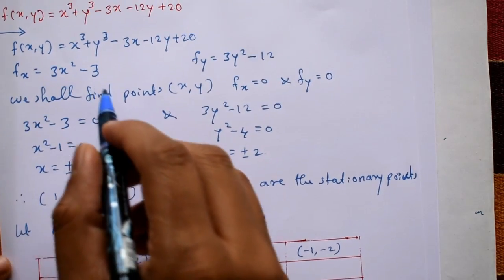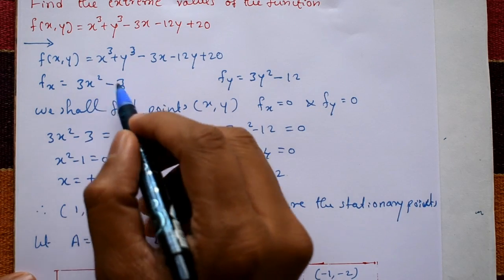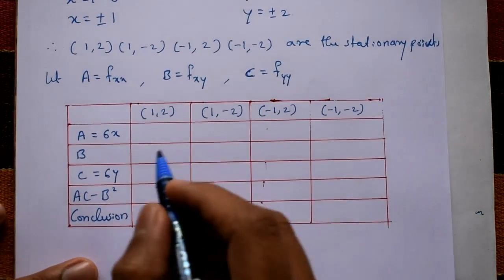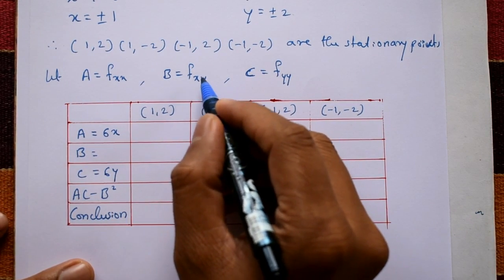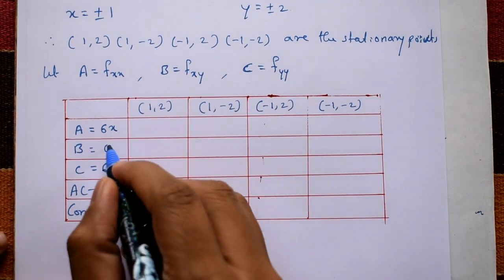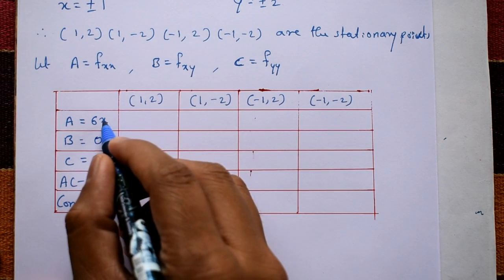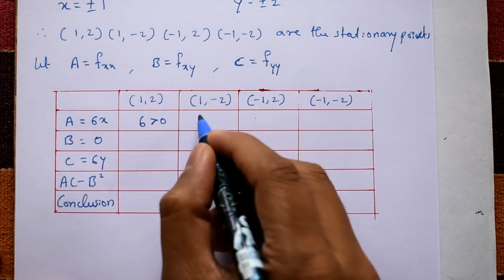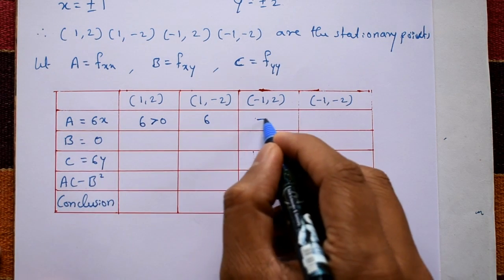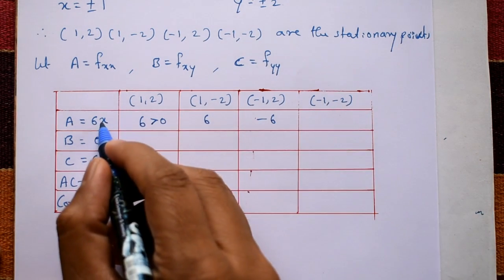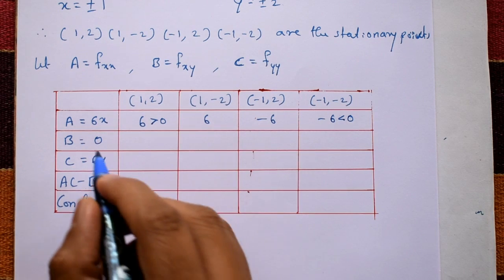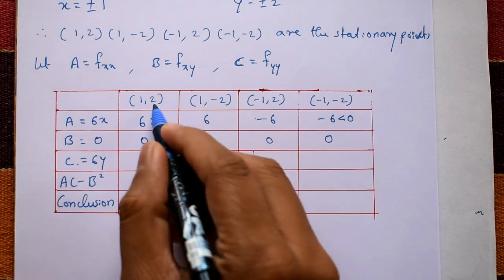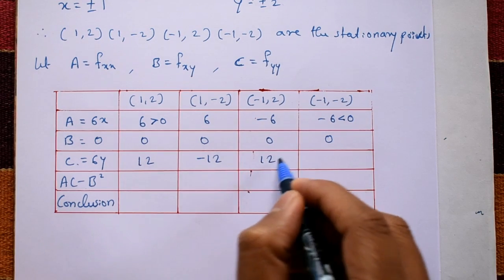Now evaluate at each stationary point. B = 0 for all points. At (1, 2): A = 6(1) = 6 > 0, C = 6(2) = 12. At (1, -2): A = 6(1) = 6, C = 6(-2) = -12. At (-1, 2): A = 6(-1) = -6 < 0, C = 12. At (-1, -2): A = -6, C = -12.